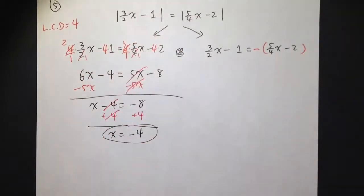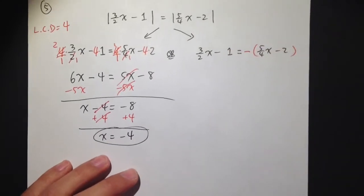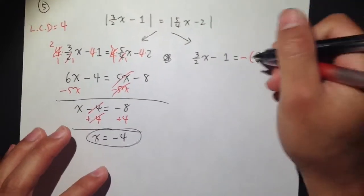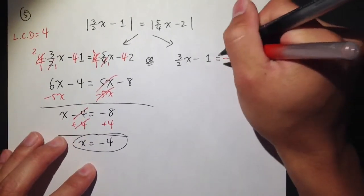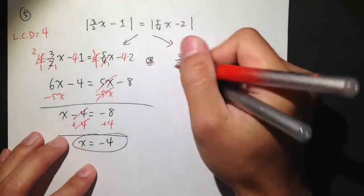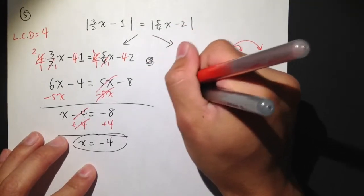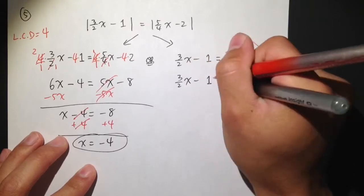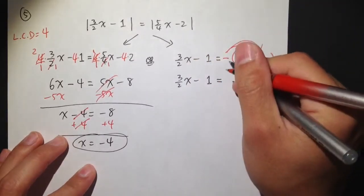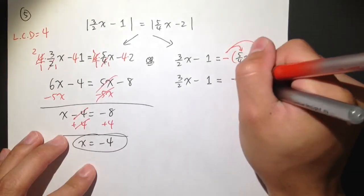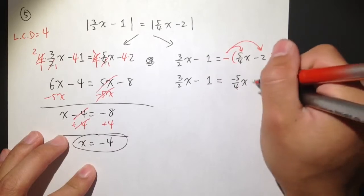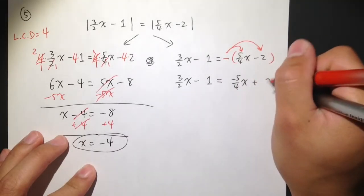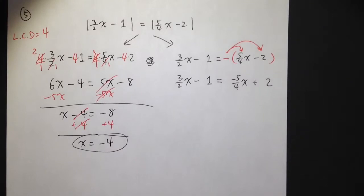And now, let's finish the second part, the second situation. So, I have a negative in front of the parentheses of this part. Let's distribute the negative sign first. The left side stays the same. 3 over 2x minus 1 is equal to, for this part, it becomes negative 5 over 4x, and negative times the negative becomes positive, and we have a 2 right here.